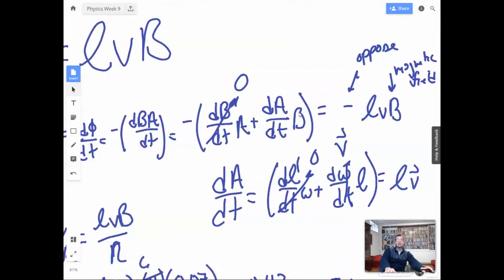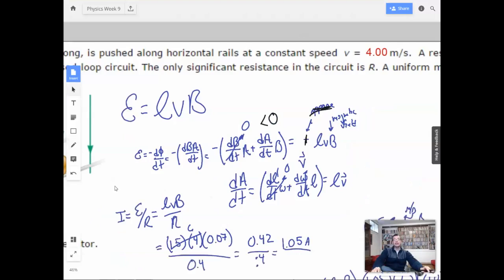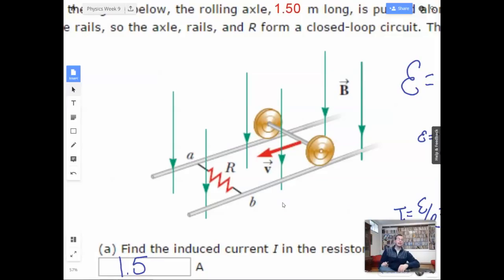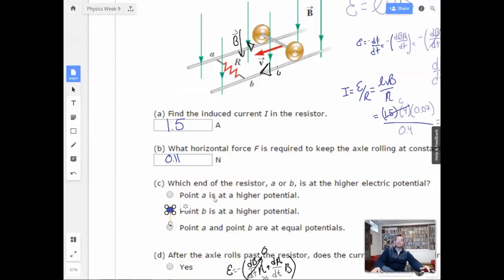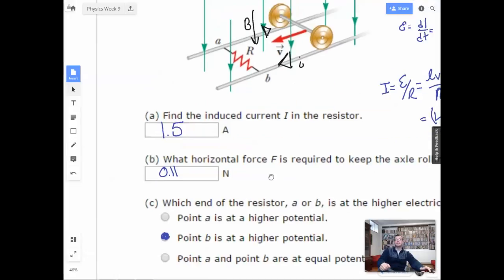So we know that this guy right here, dA/dt, is less than zero because the area is getting smaller. So that's going to be a negative times a negative. That's a positive. It does not oppose. It goes with the magnetic field. So this right here is going to be going with the magnetic field, going down. So we know there's going to be a magnetic field induced going this direction. So to do that, we're going to have to have current going this way. There we go. So it's going to flow from B to A. Therefore, B is going to be at a higher potential. Oh, I see how I did that. That's pretty good. I'm just going to pretend like that first part never happened. Man, I make so many mistakes.